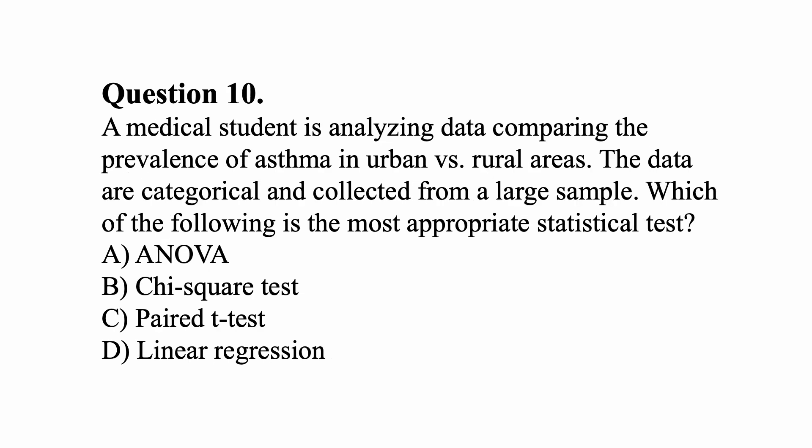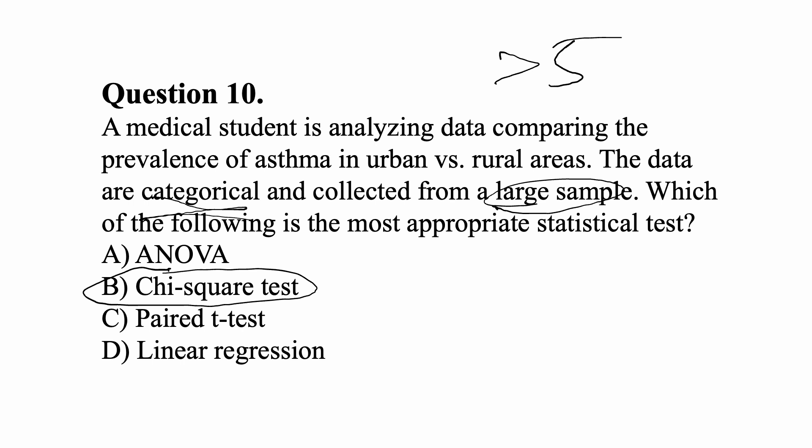Question ten: A medical student is analyzing data comparing the prevalence of asthma in urban versus rural settings. The data are categorical and collected from a large sample. Which of the following is the most appropriate test? We have categorical data from a large sample — greater than 5 — so the best way to analyze that would be a chi-square test. Thanks everyone for watching. If you have any questions, make sure to leave a comment and subscribe. Thank you all for watching our Biostat series.